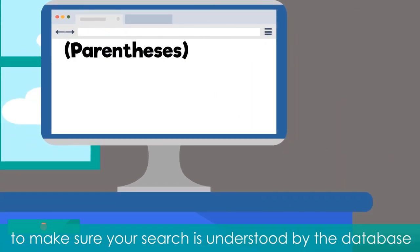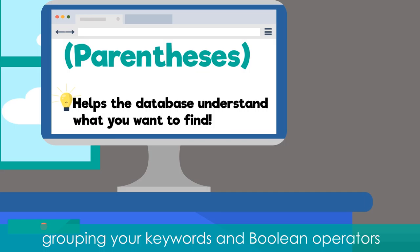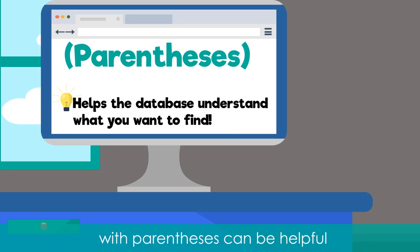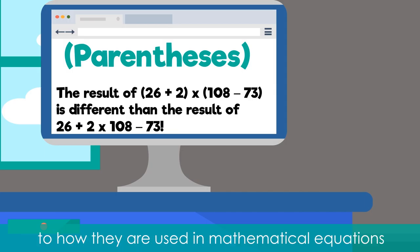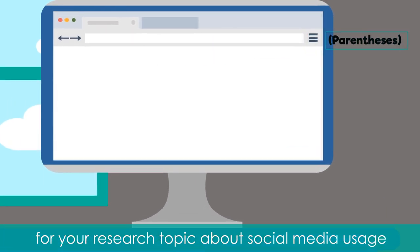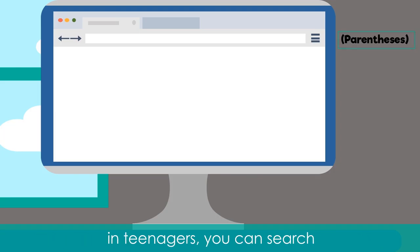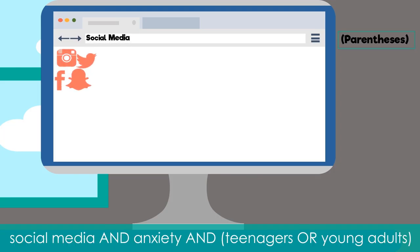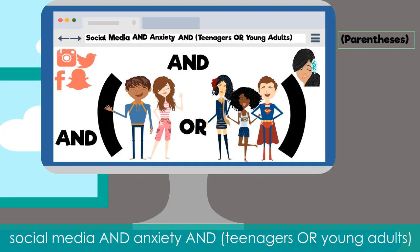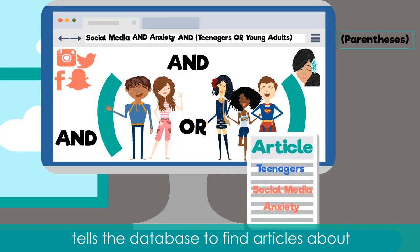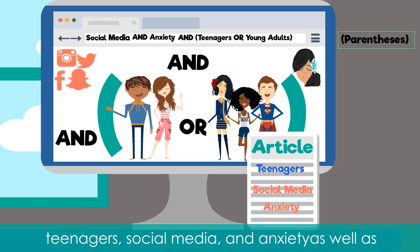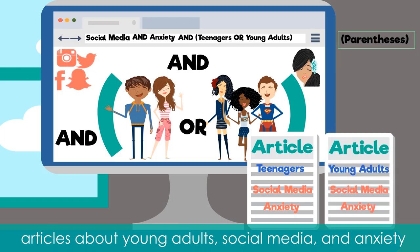To make sure your search is understood by the database, grouping your keywords and Boolean operators with parentheses can be helpful. Parentheses used in searches are similar to how they are used in mathematical equations. For your research topic about social media usage in teenagers, you can search: social media AND anxiety AND (teenagers OR young adults). The parentheses around "teenagers OR young adults" tells the database to find articles about teenagers with social media AND anxiety, as well as articles about young adults with social media AND anxiety.